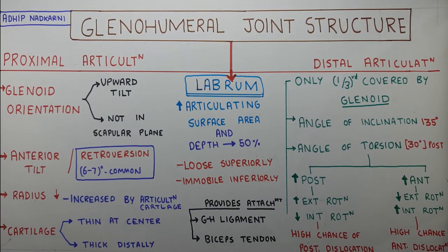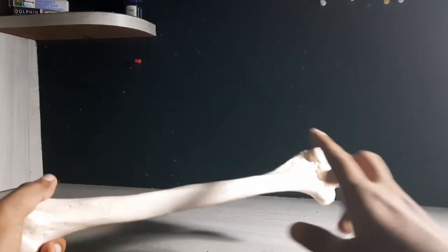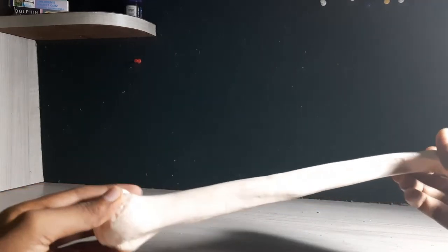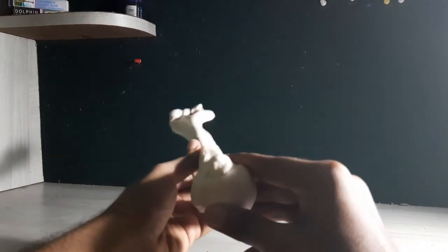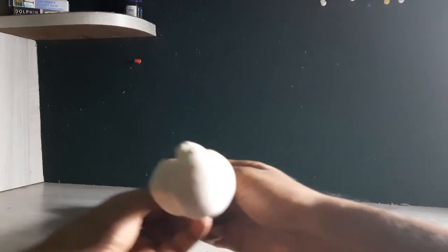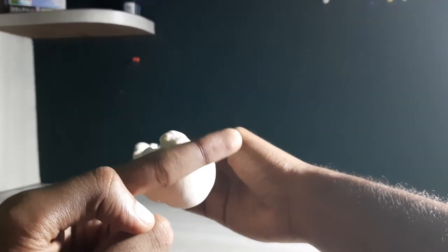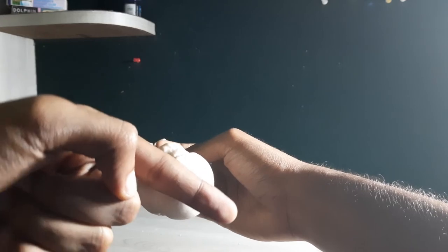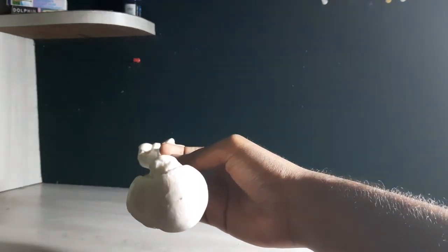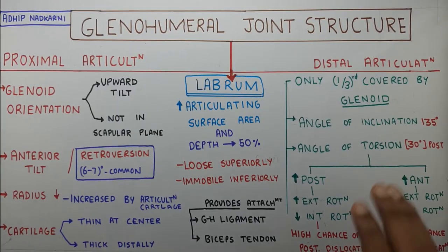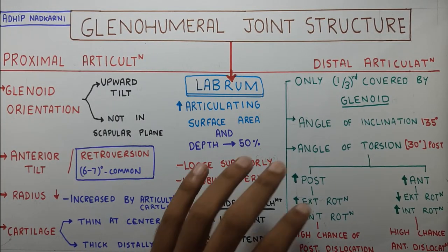The angle of torsion is around 30 degrees posteriorly. When we talk about the angle of torsion - looking at the anterior and posterior sides of the humerus - torsion refers to the direction the humeral head faces along the long axis of the humerus, whether anteriorly or posteriorly. That is basically humeral torsion. Most of the time it is on the posterior side, so commonly there is around 30 degrees of posterior torsion seen in the humerus.